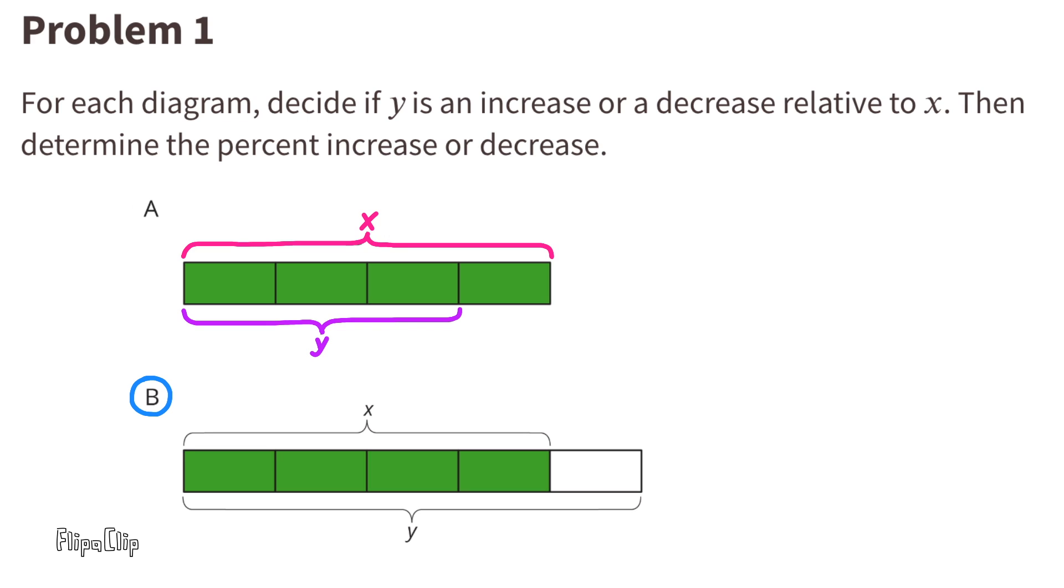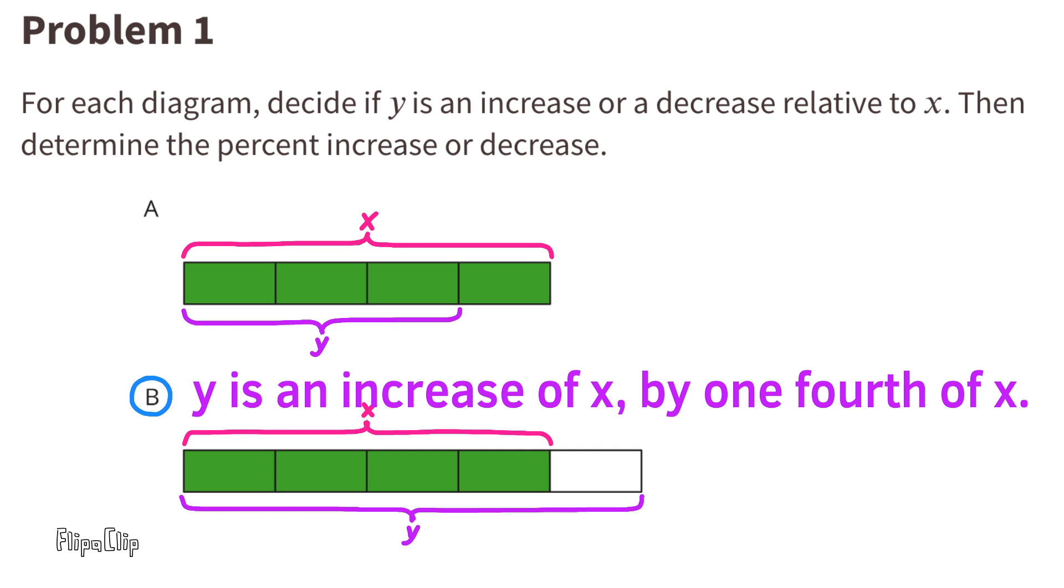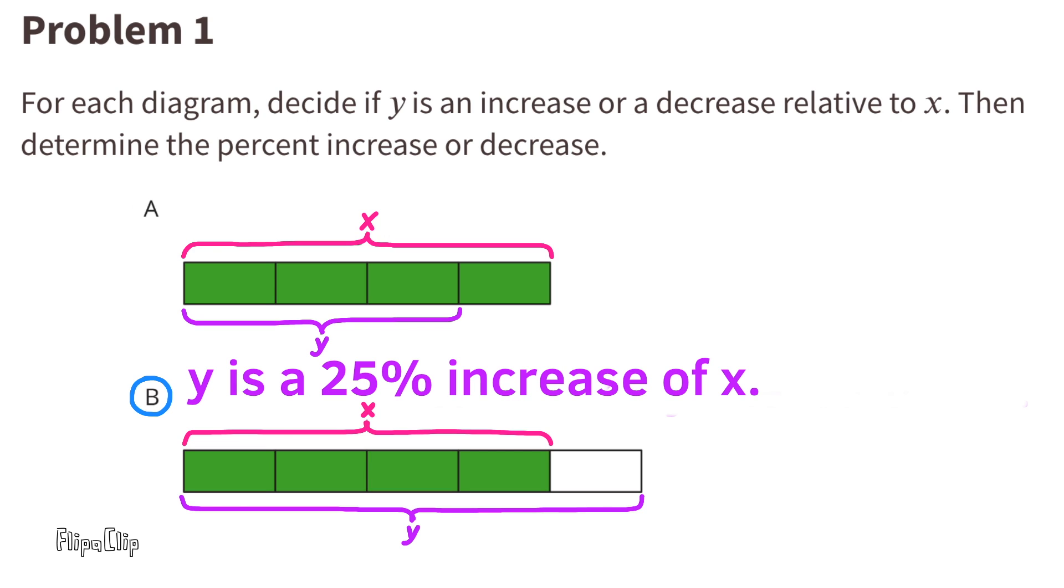B. X is a total of 4 equal sections and Y is a total of 5 equal sections. In this diagram, Y is an increase of X by one-fourth of X. Y is a 25% increase of X.